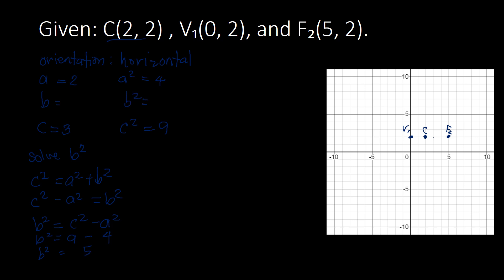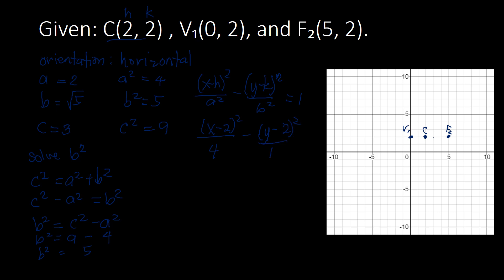Since B squared is 5, B equals the square root of 5. We can now write our standard equation. Since the orientation is horizontal, the form is (x − H)²/A² − (y − K)²/B² = 1. Plugging in — H = 2, K = 2, A² = 4, B² = 5 — we get (x − 2)²/4 − (y − 2)²/5 = 1. This is the standard equation of the hyperbola.